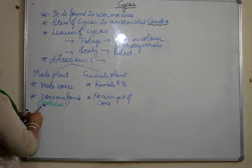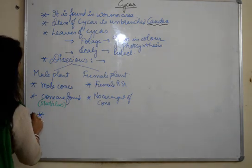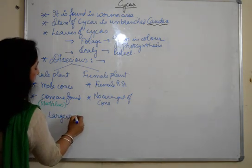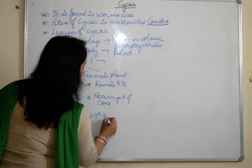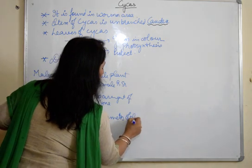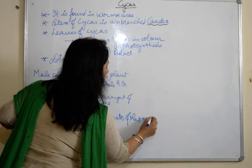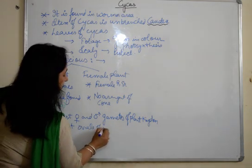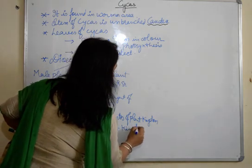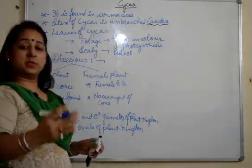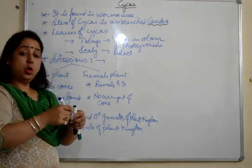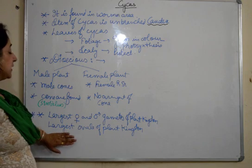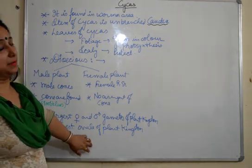Here is an important fact — you can star-mark and write this down. In cycas, we have the largest female and male gametes of the plant kingdom. And also, cycas has the largest ovule of the plant kingdom. We are doing plant kingdom, under which we are doing gymnosperms, and under gymnosperms the example is cycas. So cycas is the one which has the largest female and male gametes produced, plus it also has the largest ovule. This is a very important one-marker question.